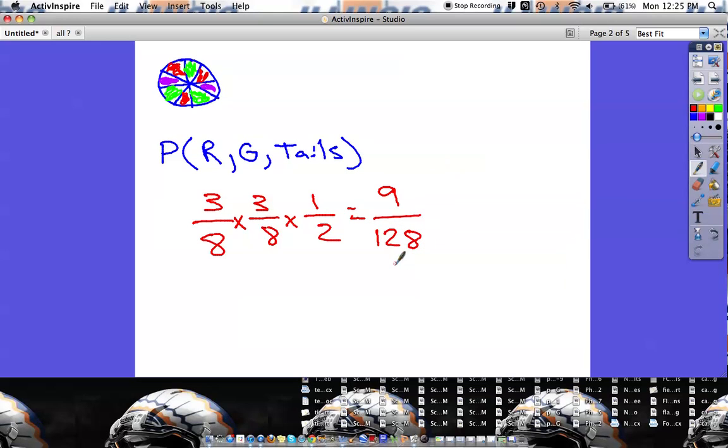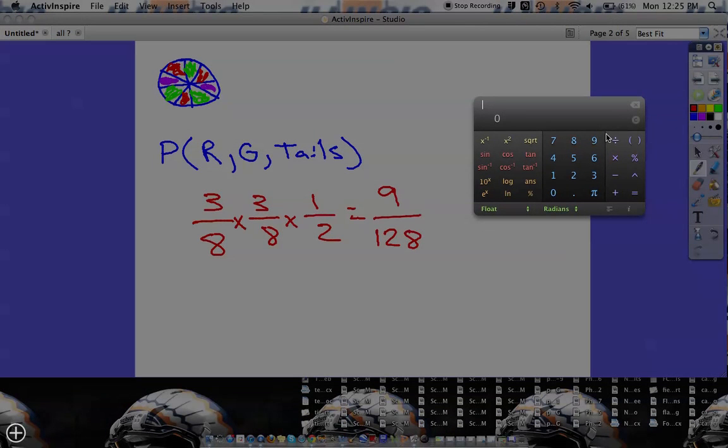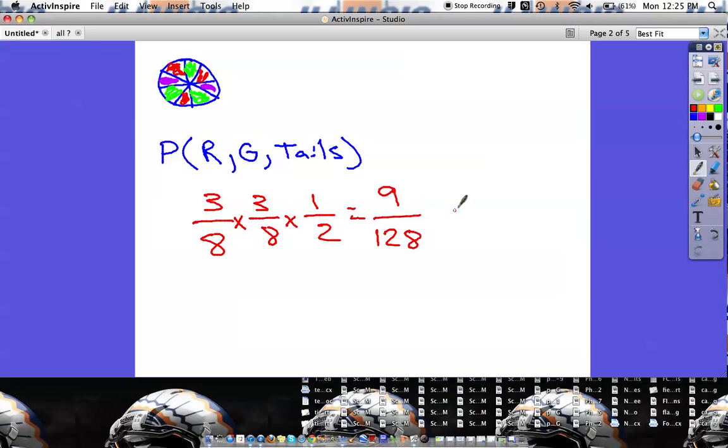Now we can reduce that down. We can also change this to a percentage which everybody should be familiar with by now just by doing 9 divided by 128. If we do 9 divided by 128 looks like we get .07. So .07 is 7%.